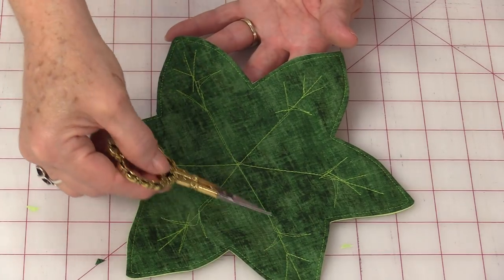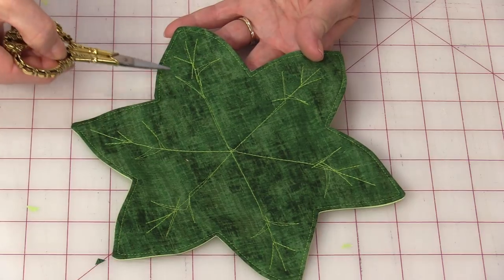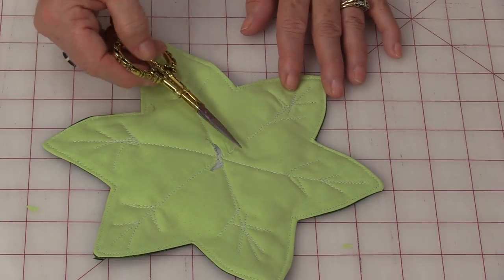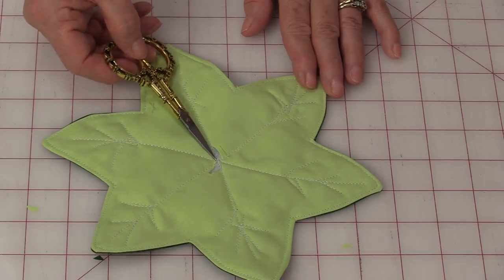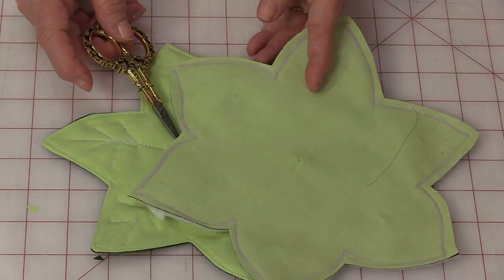I just left the feed dogs up and I went and just backstitched until I had some little areas. And by doing that, that sort of covers up that hole anyways along the bottom. You're going to need to do that to both of these pieces.